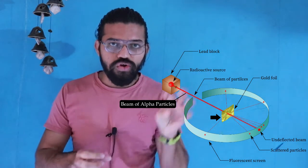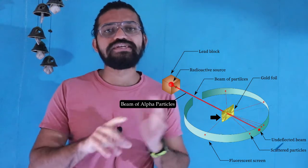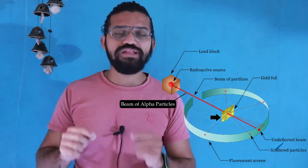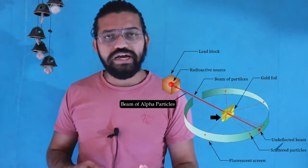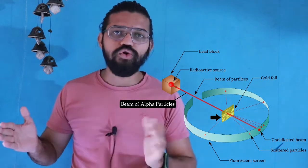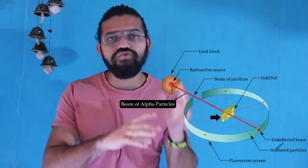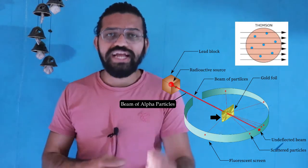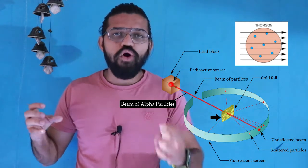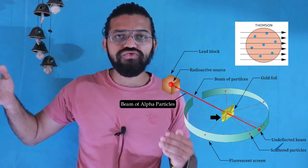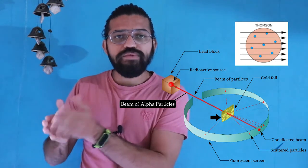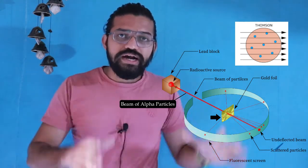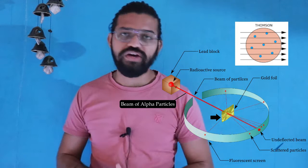A source of alpha particles was covered by a lead box, which had a small opening from which the alpha particles were emitted in a straight line to hit the gold foil. Rutherford's earlier prediction was that if the plum pudding model is correct, the beam of alpha particles passing through the gold foil should produce a straight line — with all particles going straight through.